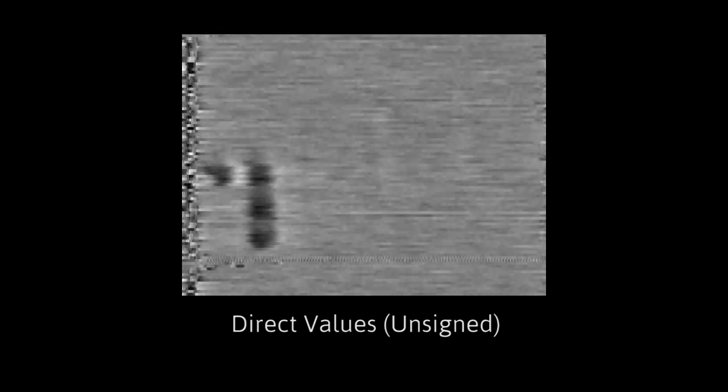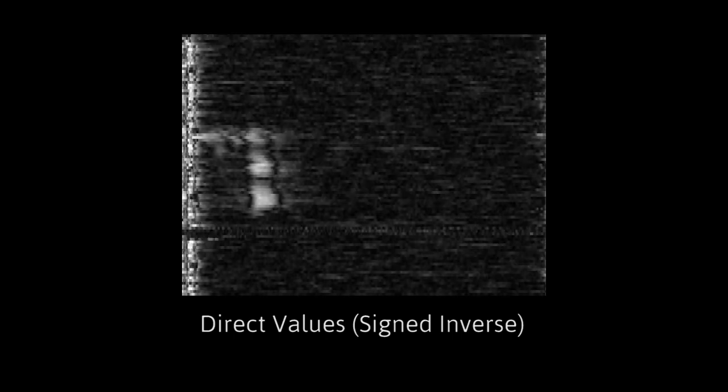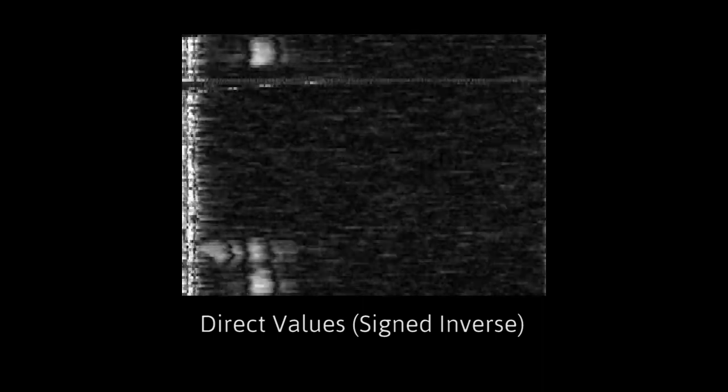Alright, I tried a few different methods for interpreting the signal as pixels. Here's the plain old direct conversion of audio amplitude to pixel brightness. And here's the amplitude interpreted as a signed value and inverted. And here's another approach using the delta, or difference in amplitude, between two adjacent samples for the output pixel brightness.